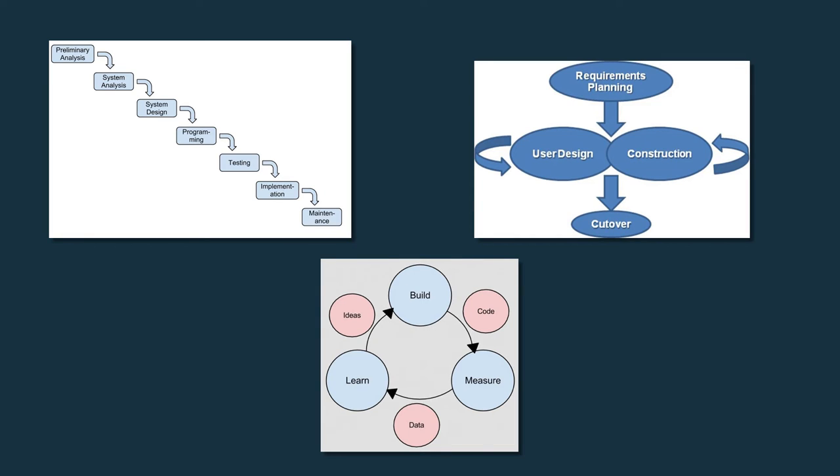The rapid application development model is a software development methodology focused on quickly building a working model of software, getting feedback from users, and using that feedback to update the working model. This methodology consists of four phases, which include requirements planning, user design, construction, and cutover.